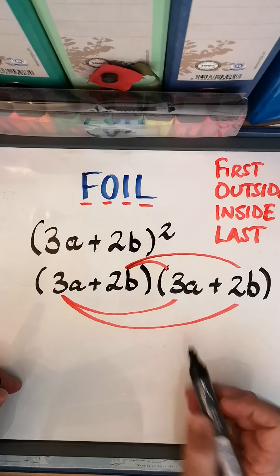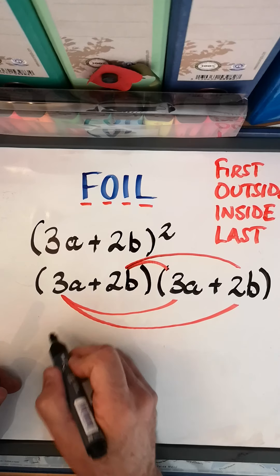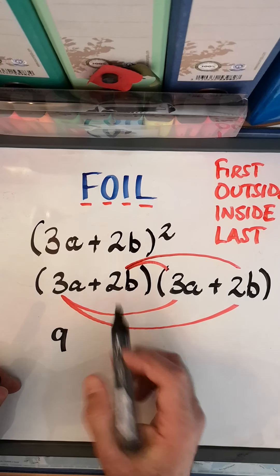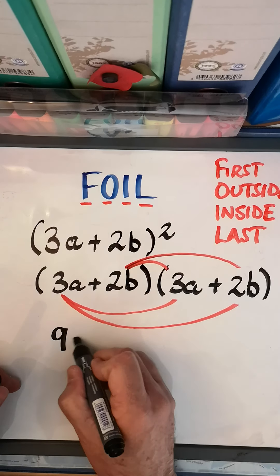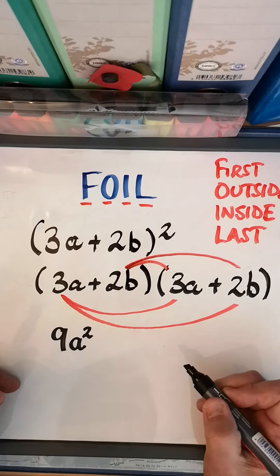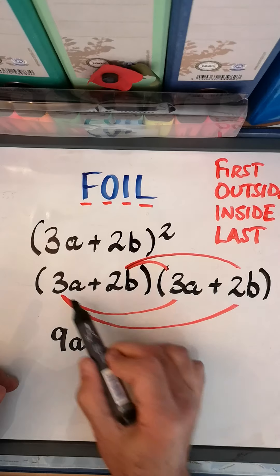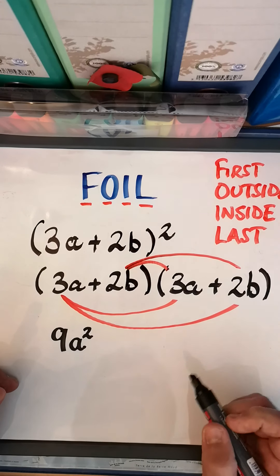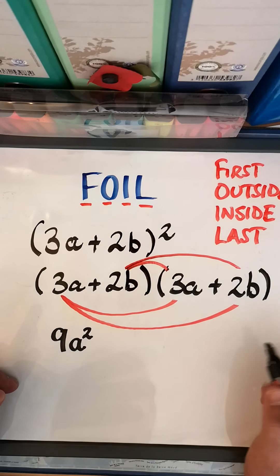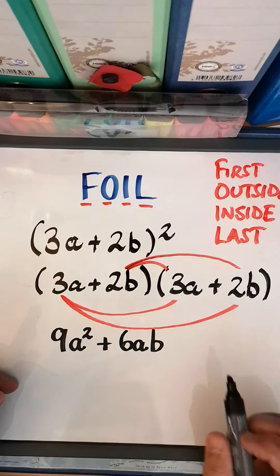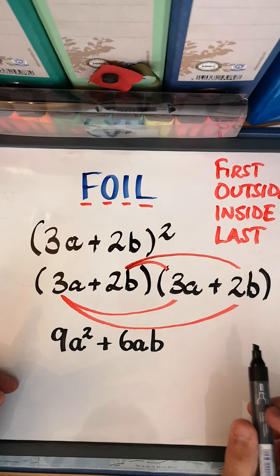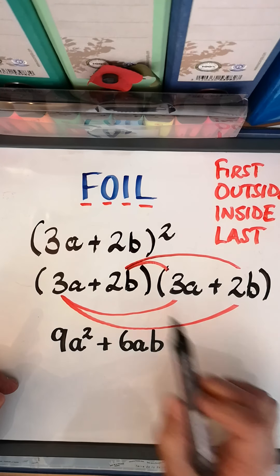Let's do the sum now. The first was 3a times 3a. What's 3 times 3? 3 times 3 is 9, a times a is a². Now we've done the first. Now we go to the two outside ones. What is 3a times 2b? That is 6ab.